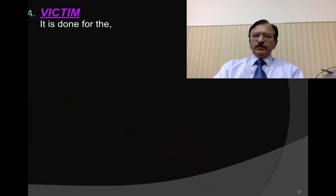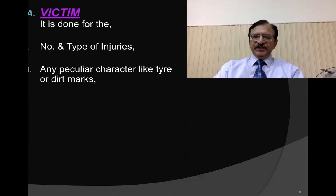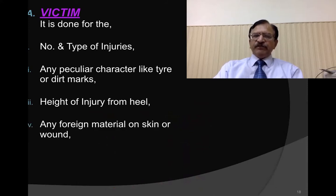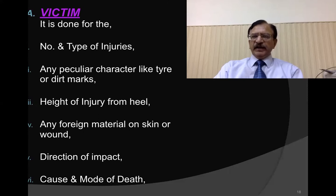The investigation includes examination of the victim: the number and type of injuries, any peculiar characteristics such as tire marks or dirt marks, the height of injury from the heel — which is of particular importance in bumper fractures for pedestrians — any foreign material on the skin or wound, the direction of impact, and the cause and mode of death.